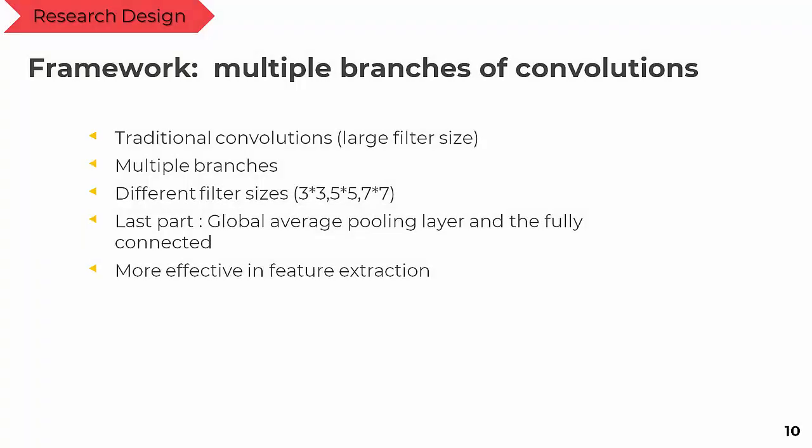To deal with overfitting, we add different techniques. Our model is composed of traditional convolutions and multiple branches with different filters — 3×3, 5×5, and 7×7 — and we also use a global average pooling layer and a fully connected layer, making it more effective in feature extraction. Our proposed framework has multiple branches of convolution, which generates several base networks including shared parameters, optimizing the flow, enhancing the training process of the deep network, and allowing the model to take advantage of multi-level feature extraction at each step.